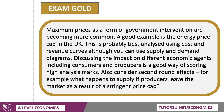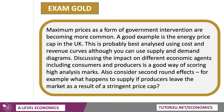Discussing the impact on different economic agents — consumers, producers, governments, and so on — is a good way of scoring high analysis marks. But please also consider possible second-round effects. If this is a very tight, low price cap, what happens to supply if producers decide to leave the market — not just cut back on production, but leave the market completely as a result of a stringent price cap? What happens, for example, if landlords decide to effectively move out of the market completely? That's when you can really start to develop your diagrams. Hopefully this was a useful short video on maximum prices and economic welfare. Thank you, take care and see you soon.